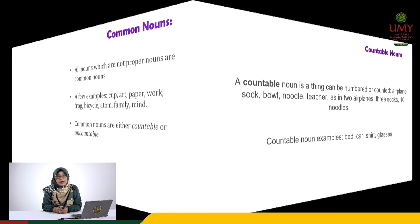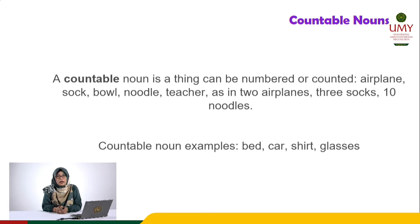Nouns can also be categorized as countable or uncountable. A countable noun is a thing that can be numbered or counted. For example: airplane, sock, bowl, noodle, teacher — or we can say two airplanes, three pairs of socks, ten noodles, and so on. Countable noun examples such as bed, car, shirt, and glasses are very easily found in your surroundings.